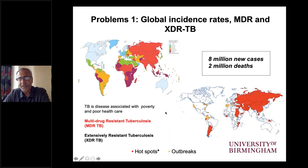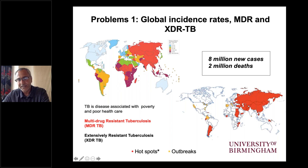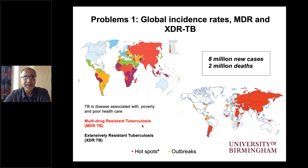So why study tuberculosis? When we look at global incidence rates, we have around 8 million new cases each year and 2 million deaths. Epidemiological maps show high incidence in parts of Asia, Africa, and South America. We're also seeing the emergence of multi-drug resistant tuberculosis in these same regions, and now extensively drug resistant tuberculosis as well.